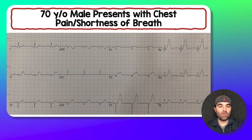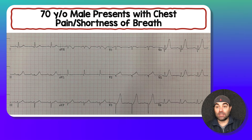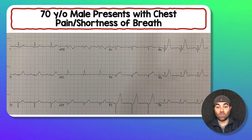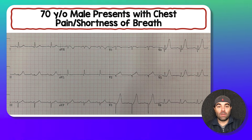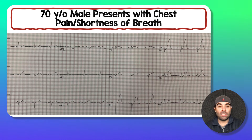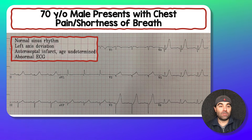Just quickly looking over this, the leads that caught my attention initially were V3, V4, and V5 — but V2 also caught my attention as well. Interestingly, the EKG machine read this as normal sinus rhythm, left axis deviation, anteroseptal infarct, age undetermined, abnormal EKG.